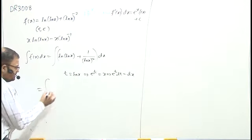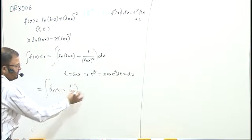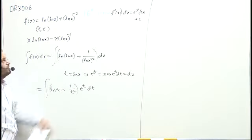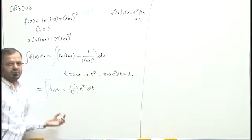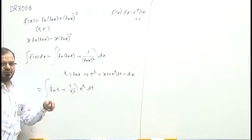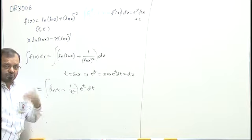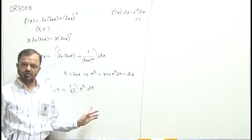So I can write here it is ln t plus 1 by t square into e power t dt. I have to make use of this formula. Here it is f of x then it is f dash x. I know that if it is ln t, the derivative is 1 by t but here no 1 by t is there. Also, I know that derivative of minus 1 by t will become 1 by t square.